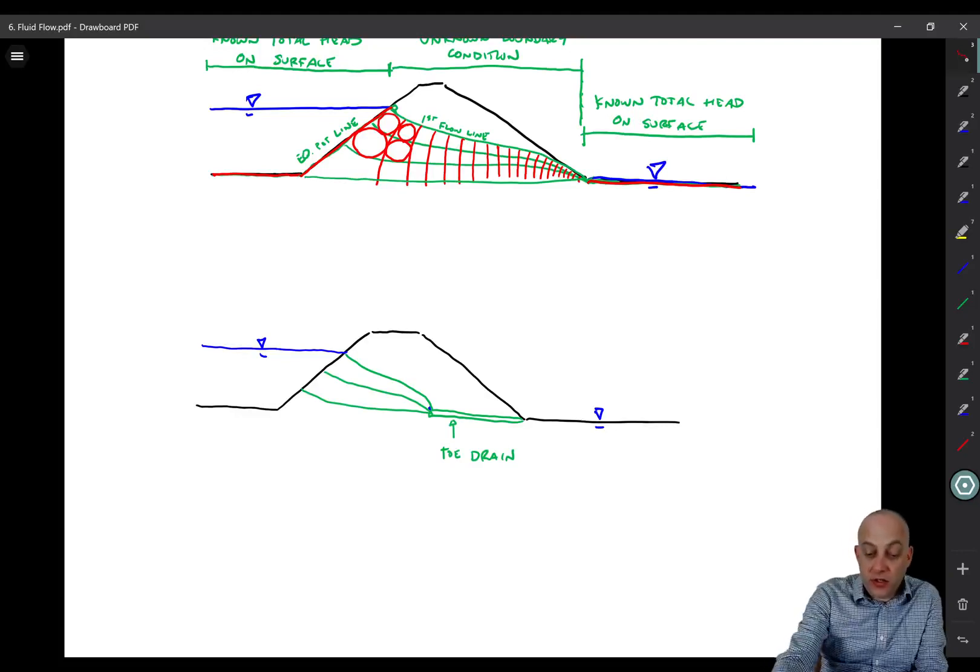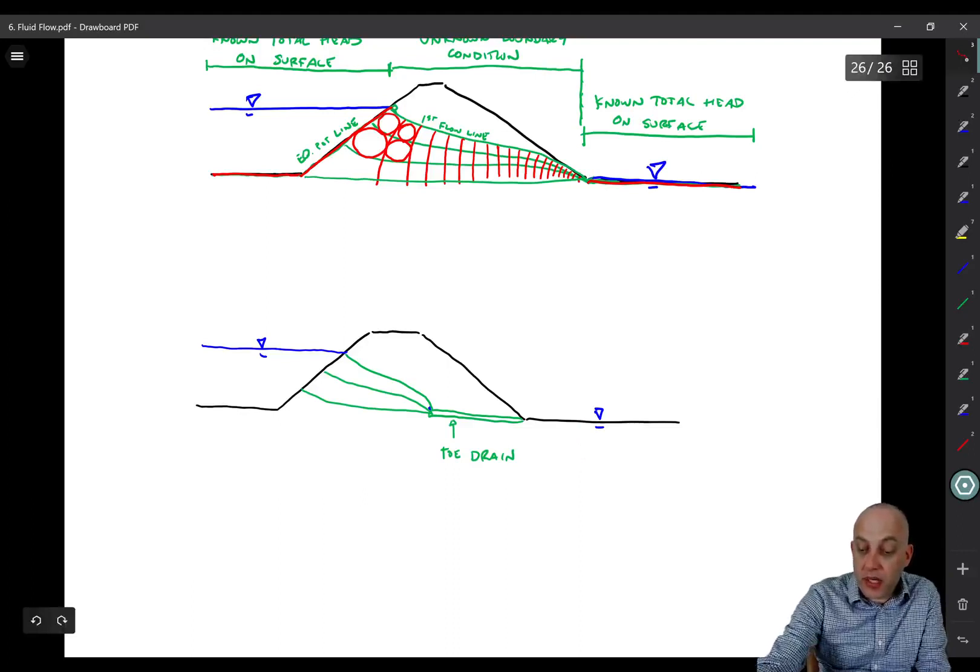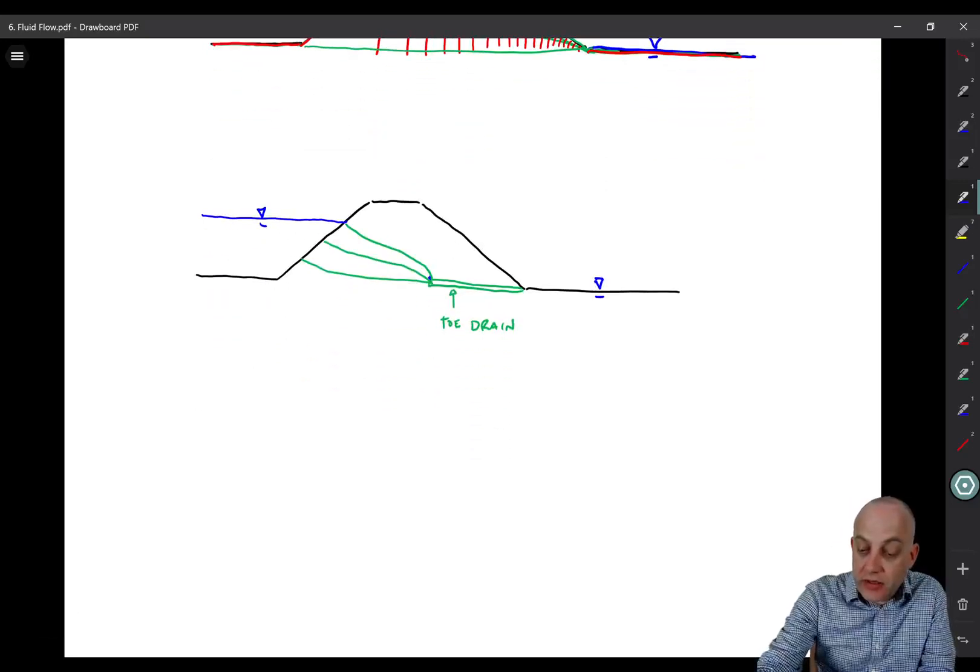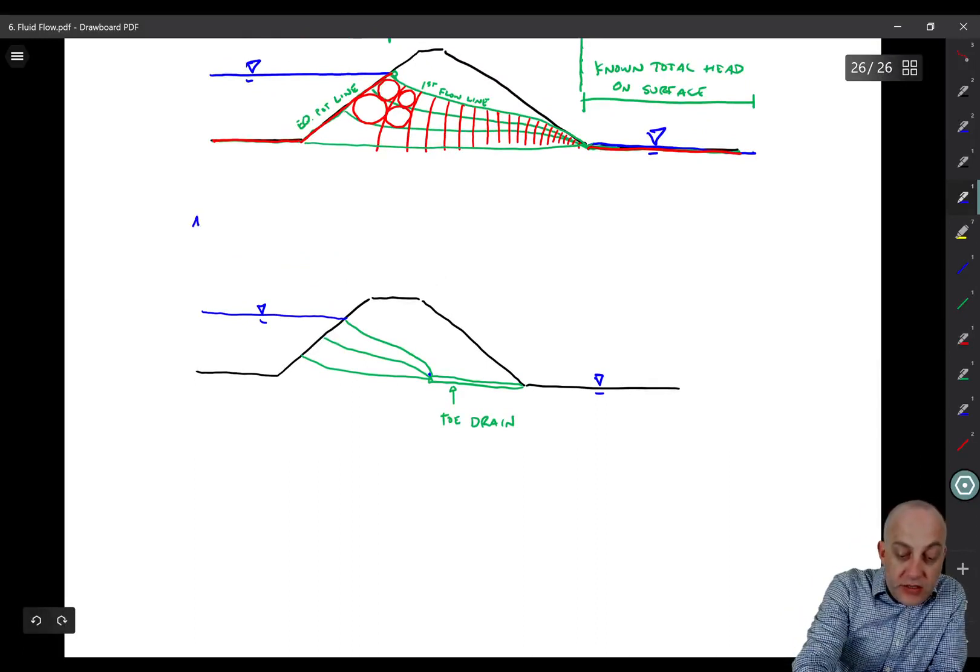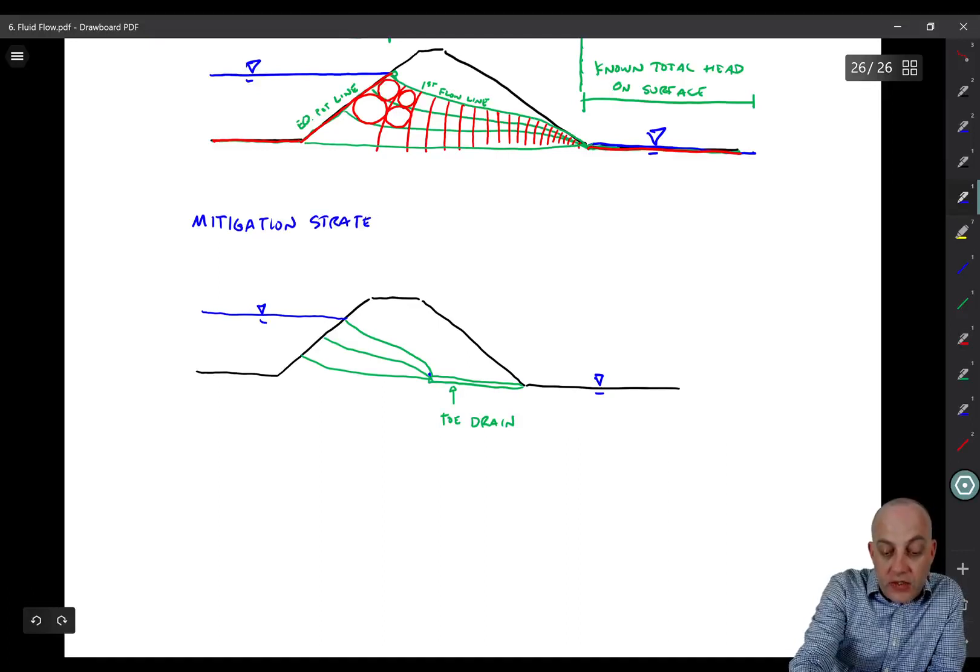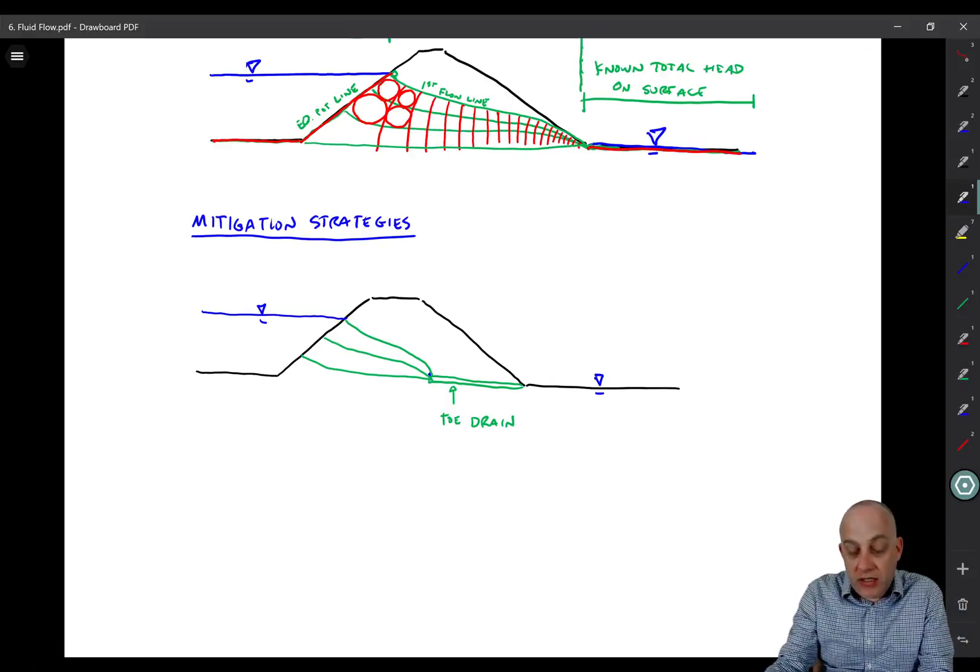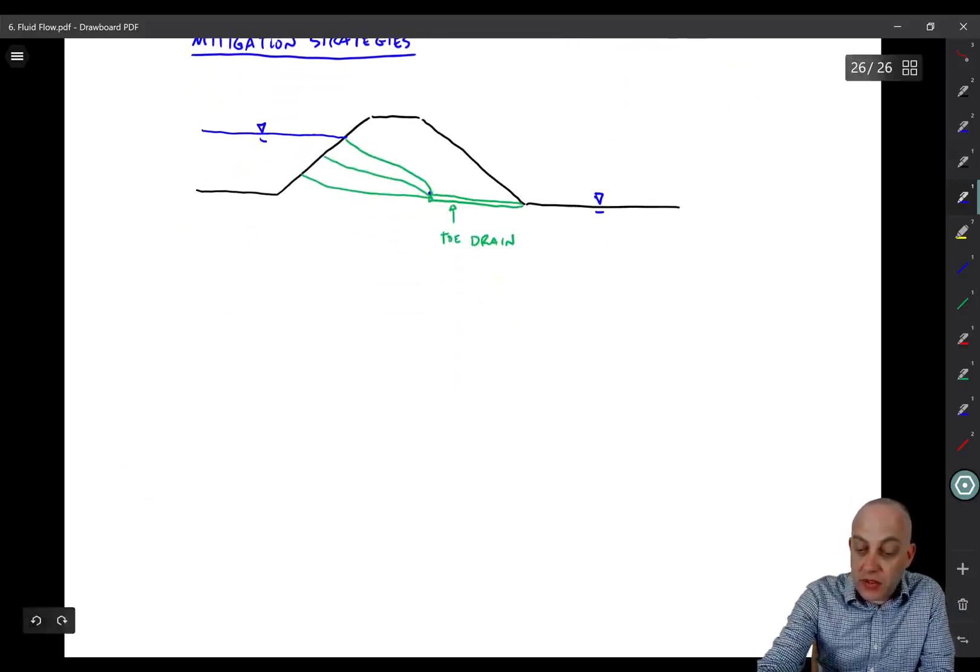Similarly, you could lower this water table. Like if you put a pump here on the downstream side to move the water table down, that would also potentially move the water surface so it doesn't exit through the downstream face of the levee. Another mitigation strategy is to control the amount of flow that's going through the levee by putting a low permeability barrier. And that's generally how we tend to build earth dams.